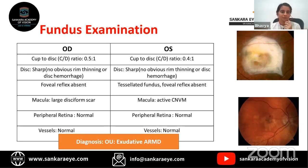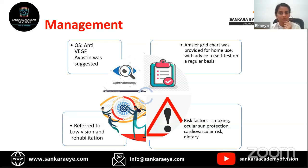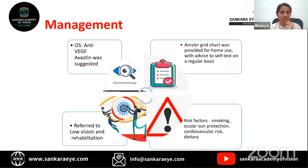Management for this case: for the left eye, anti-VEGF (Avastin) was suggested. The patient was given an Amsler grid chart for home use and guided on how to self-assess for scotoma. He was asked to return if he noticed any scotoma or metamorphopsia. The patient was referred to the low vision and rehabilitation clinic, and risk factors — smoking, ocular sun protection, cardiovascular risk, and diet — were also addressed.